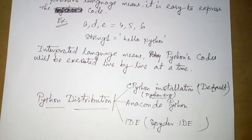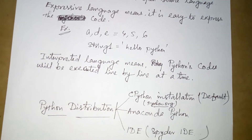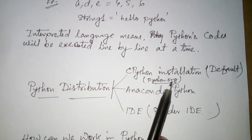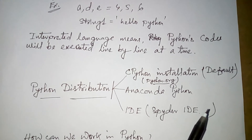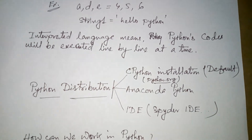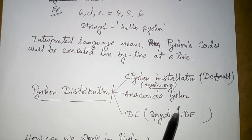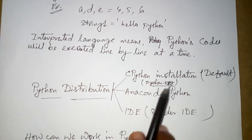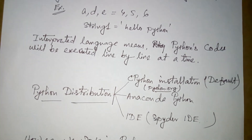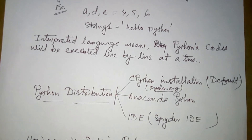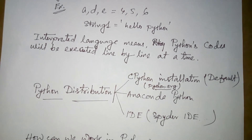We are going to run Python. We are going to install the distribution — specifically the CPython installation, which is the default. We can download it from python.org. We are going to install CPython and explore its features.